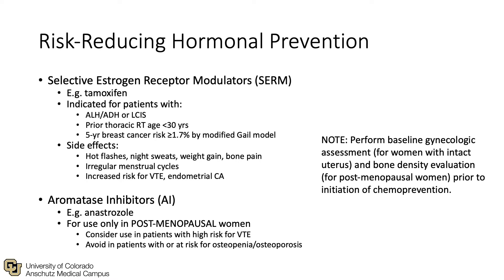Let's discuss risk-reducing hormonal prevention. This can be done with selective estrogen receptor modulators like tamoxifen or aromatase inhibitors like anastrozole. They are indicated for patients with atypical hyperplasia or LCIS and prior thoracic radiation therapy at age less than 30 years, or a five-year breast cancer risk greater than 1.7% by the modified Gale model.